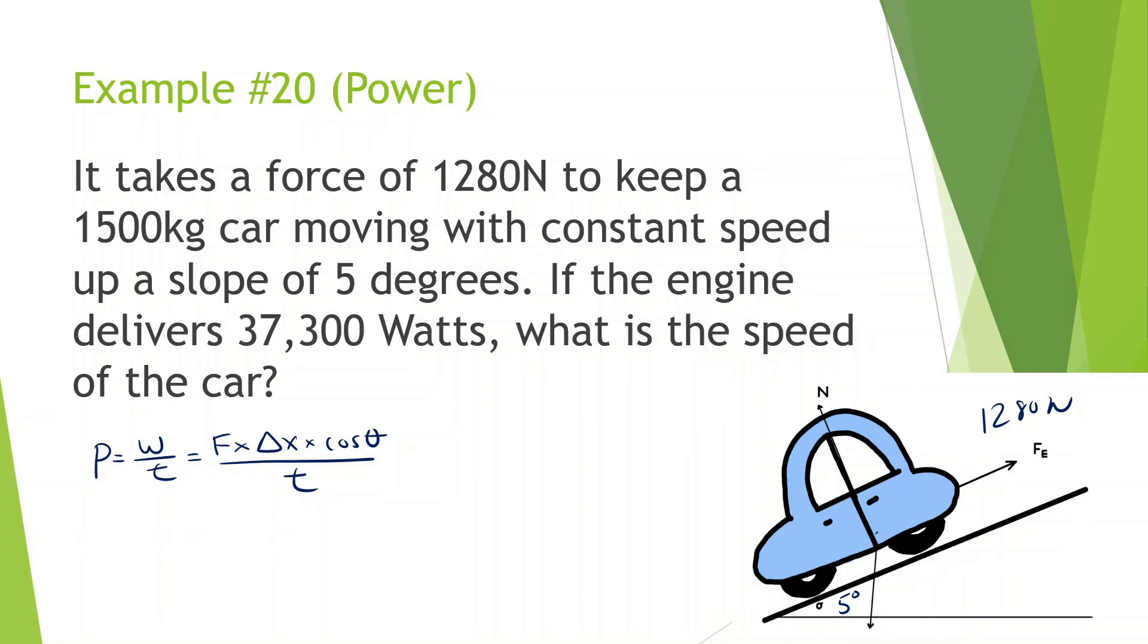One thing we don't have to worry about is the force and displacement are going the same direction, so this just turns to one. But another thing we could figure out is displacement over time is equal to velocity. So we have another formula here: power is equal to force times velocity. And we can only do that when we have a constant speed.